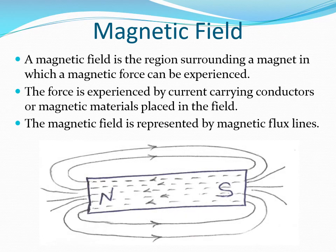A magnetic field is the region around a magnet in which a magnetic force can be experienced. Magnetic force is experienced by current-carrying conductors or by magnetic materials placed in the field. The magnetic field is represented by imaginary lines called magnetic flux lines. Each magnetic flux line is in the form of a complete loop. The direction of the flux line in the magnetic field is from the North Pole to the South Pole, and in the magnet it is from the South Pole to the North Pole.